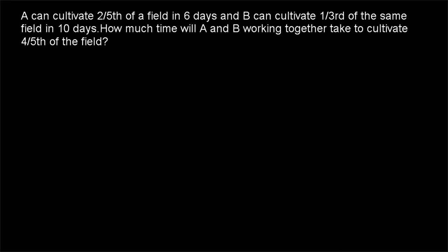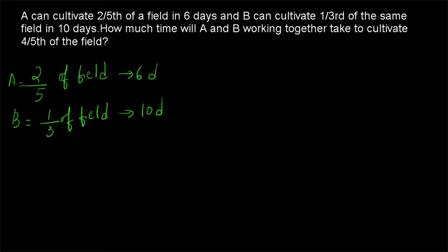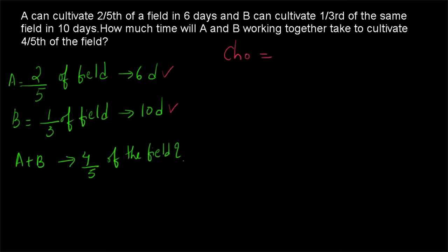So let's see how to do this problem. A is able to cultivate two-fifths of the field in six days and B is able to cultivate one-third of the field in ten days. We are adopting the chocolate approach here. A is taking six days and B is taking ten days, so the total number of chocolates will be equal to the LCM of six and ten, which is thirty.